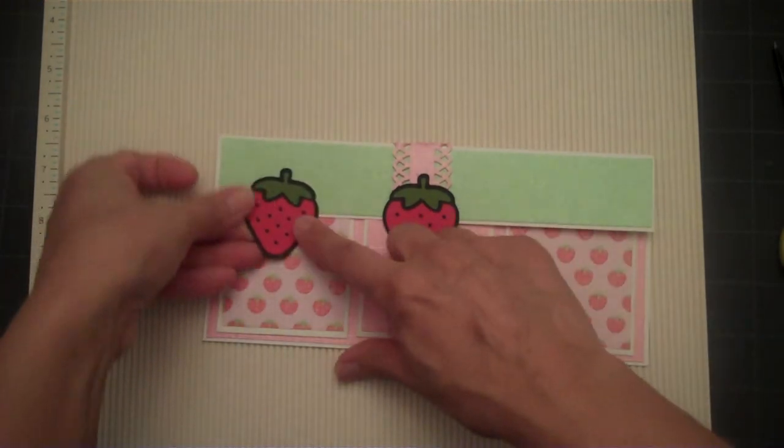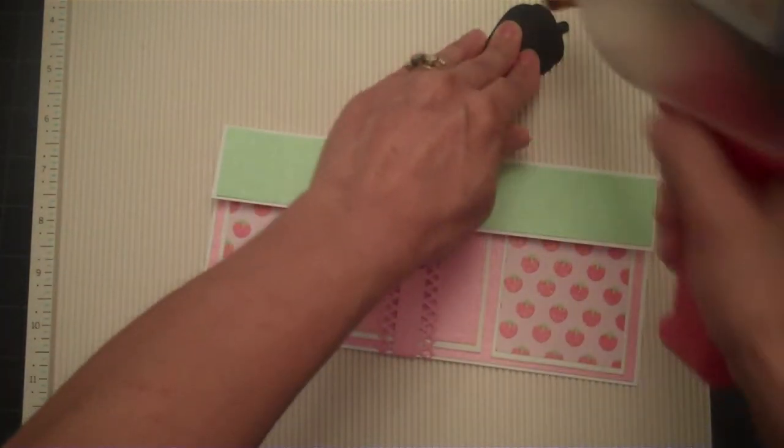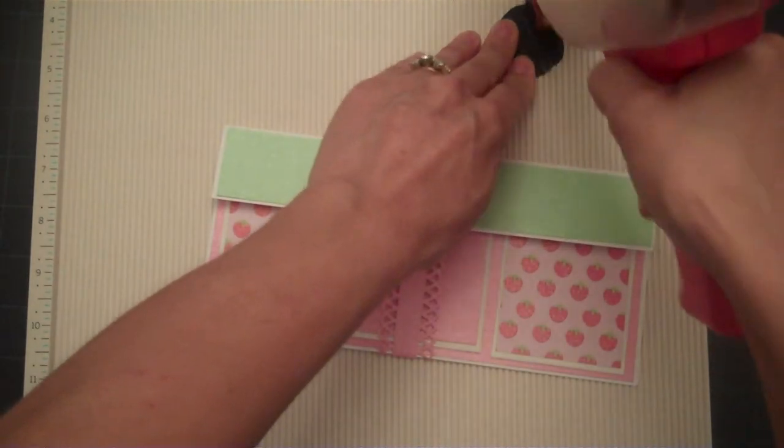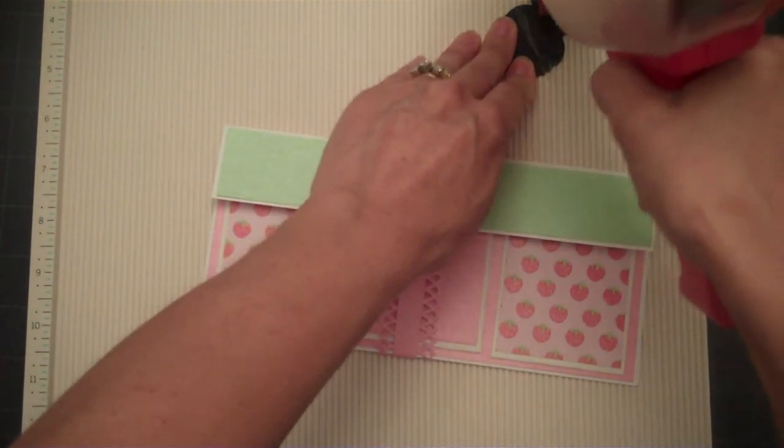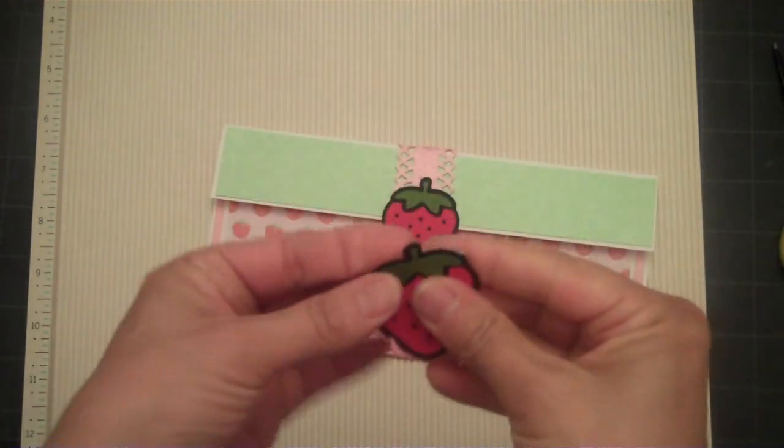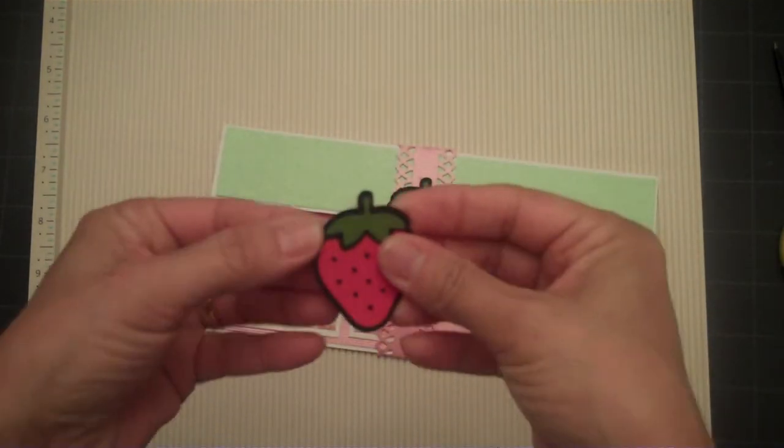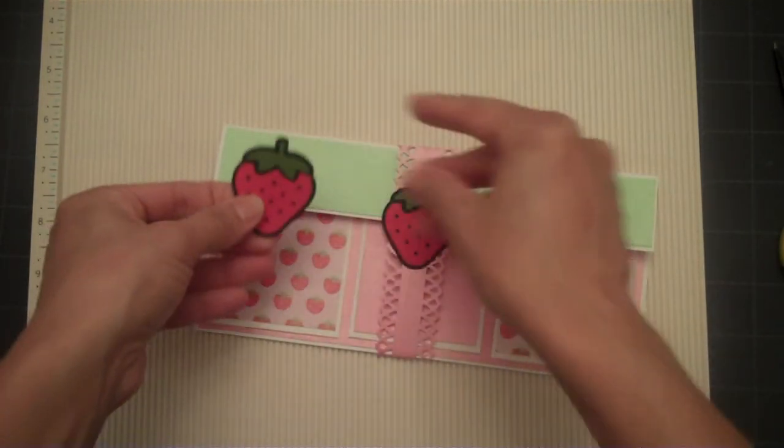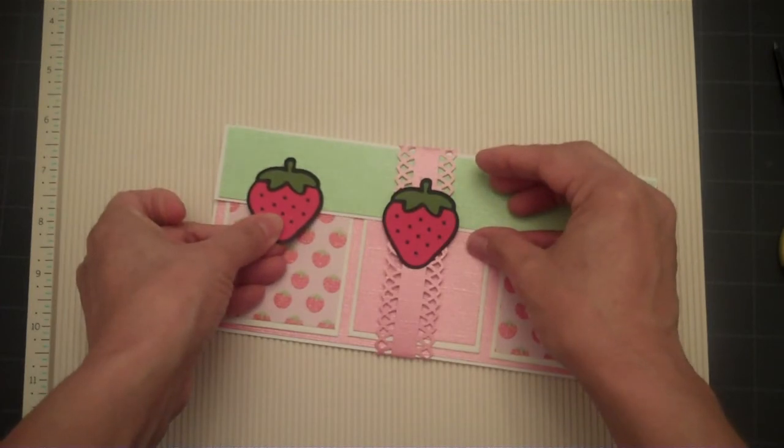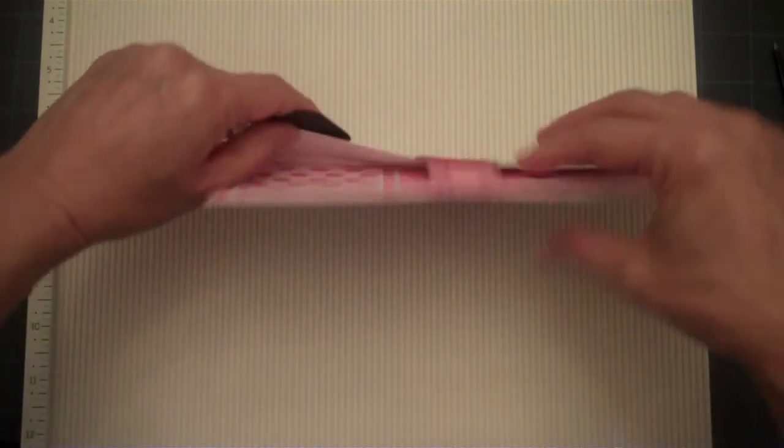So we'll go ahead and do the other two strawberries. And I'm just going to put adhesive on half of the strawberry, the upper portion of it. And this is so cute because they're hanging down onto the little bags.